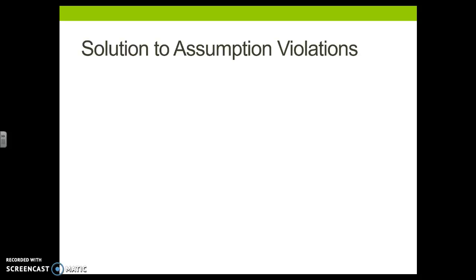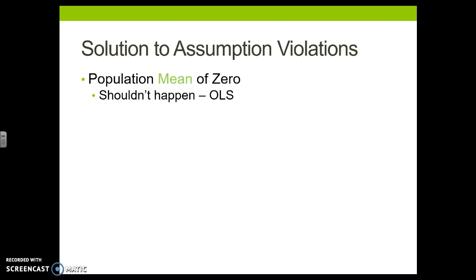Welcome students. This video is about what to do when we have checked the regression assumptions and found a violation. The first assumption is a population mean of zero. This shouldn't happen — if we are using the ordinary least squares equation with a best fit line, the population mean of the errors should be zero, meaning positive and negative errors cancel out. We shouldn't have a violation there.